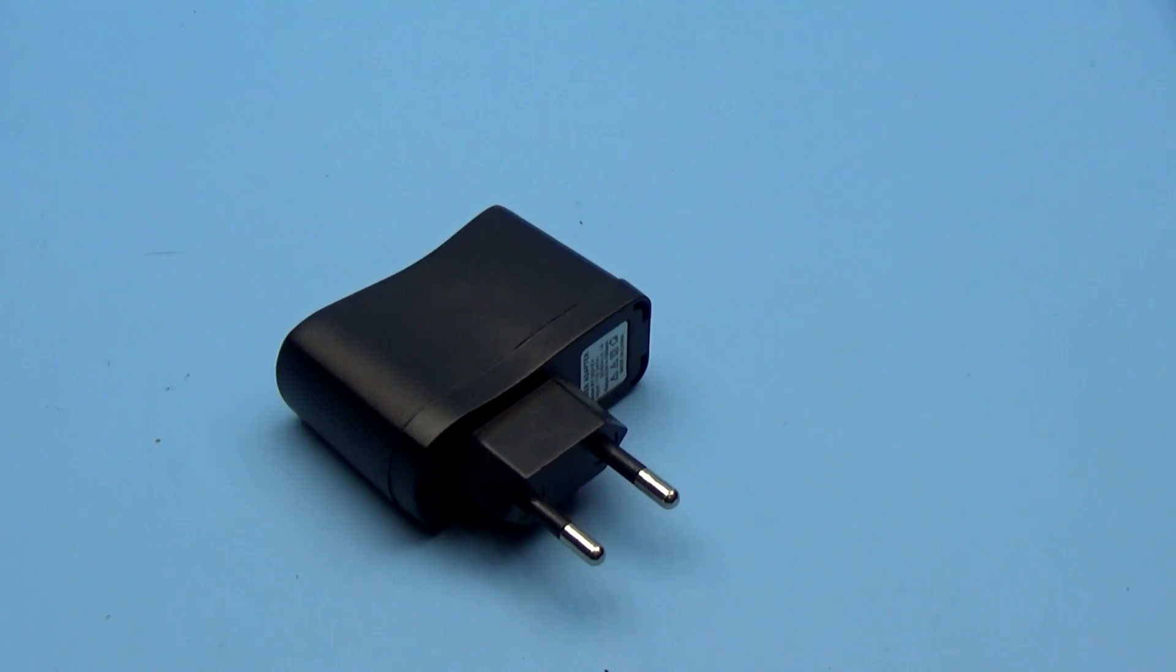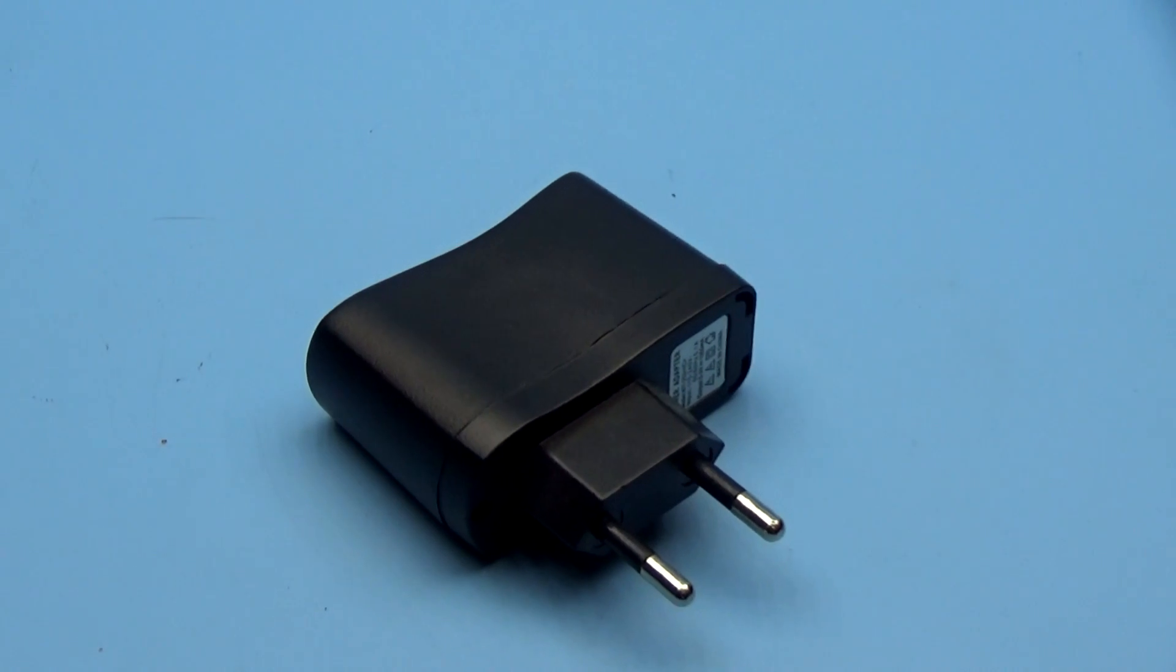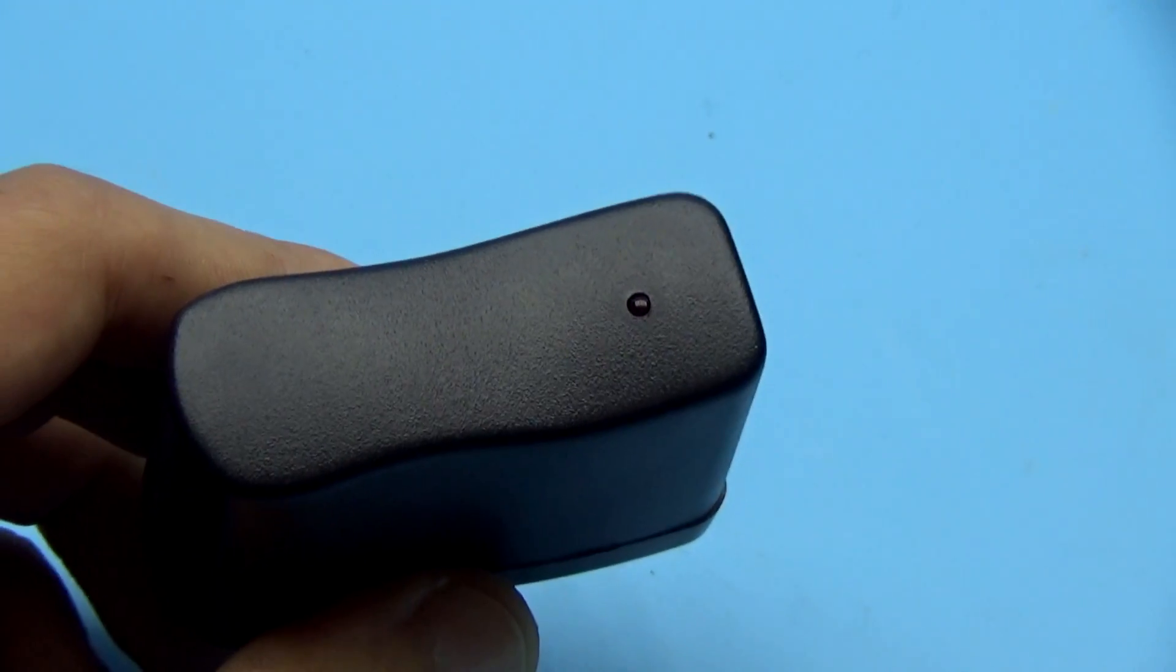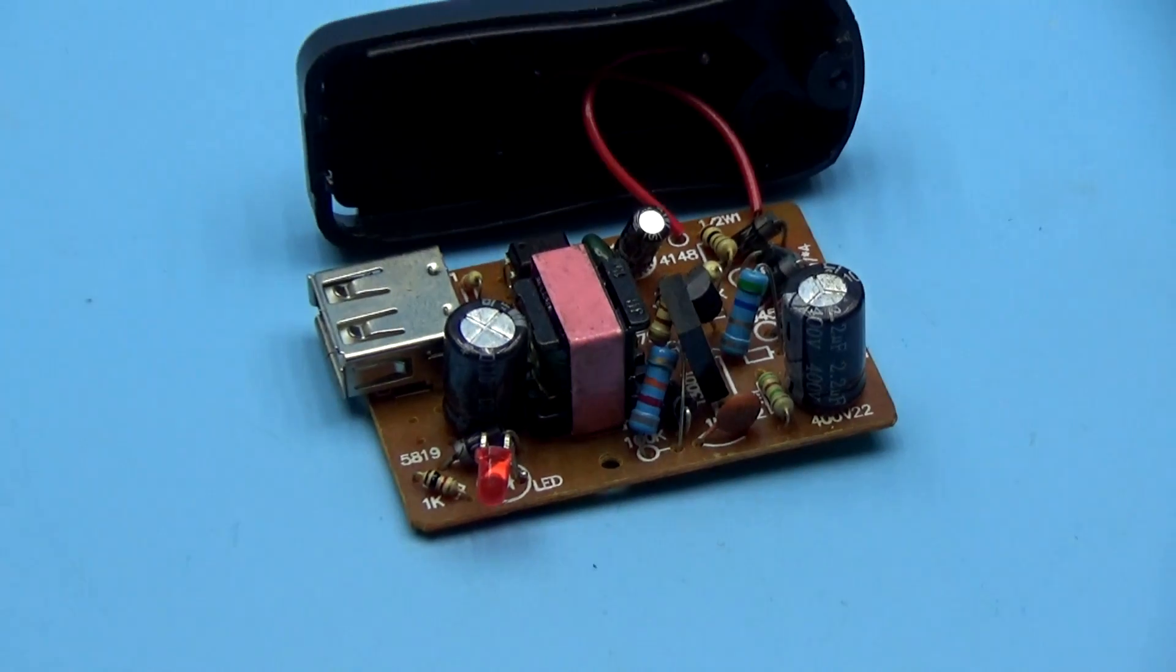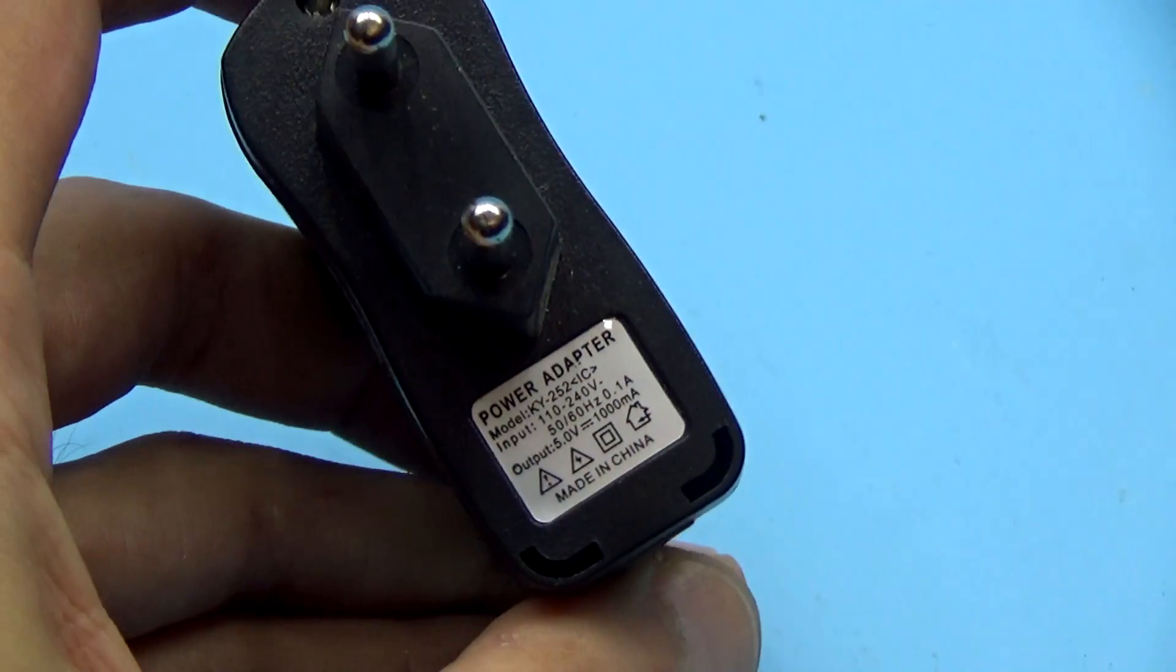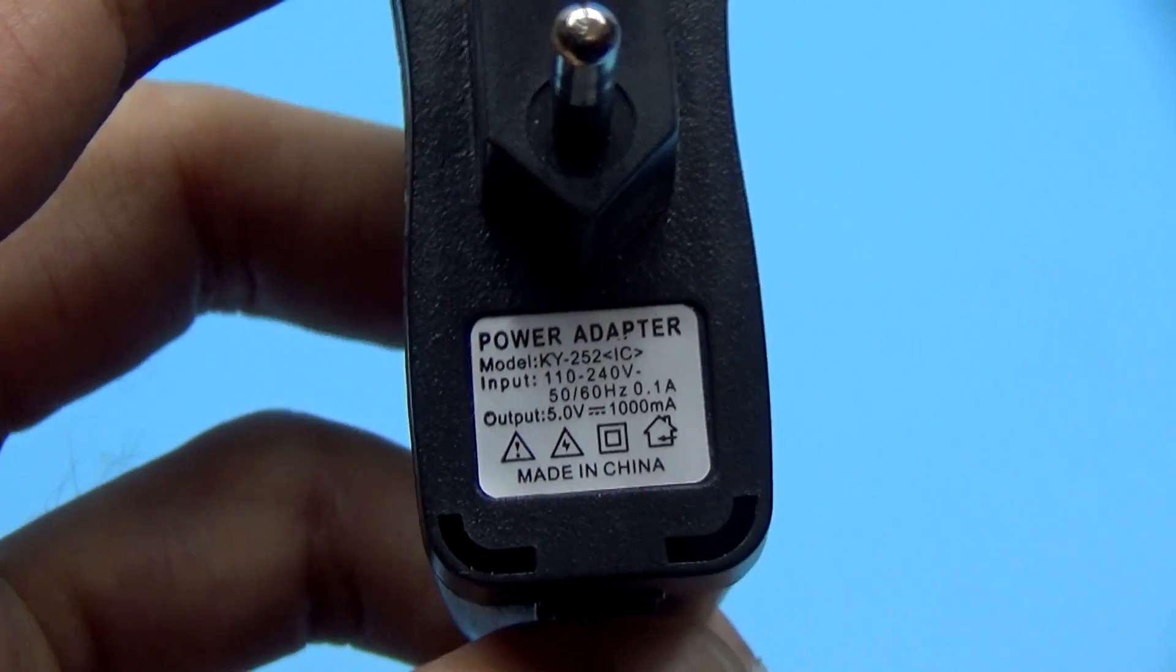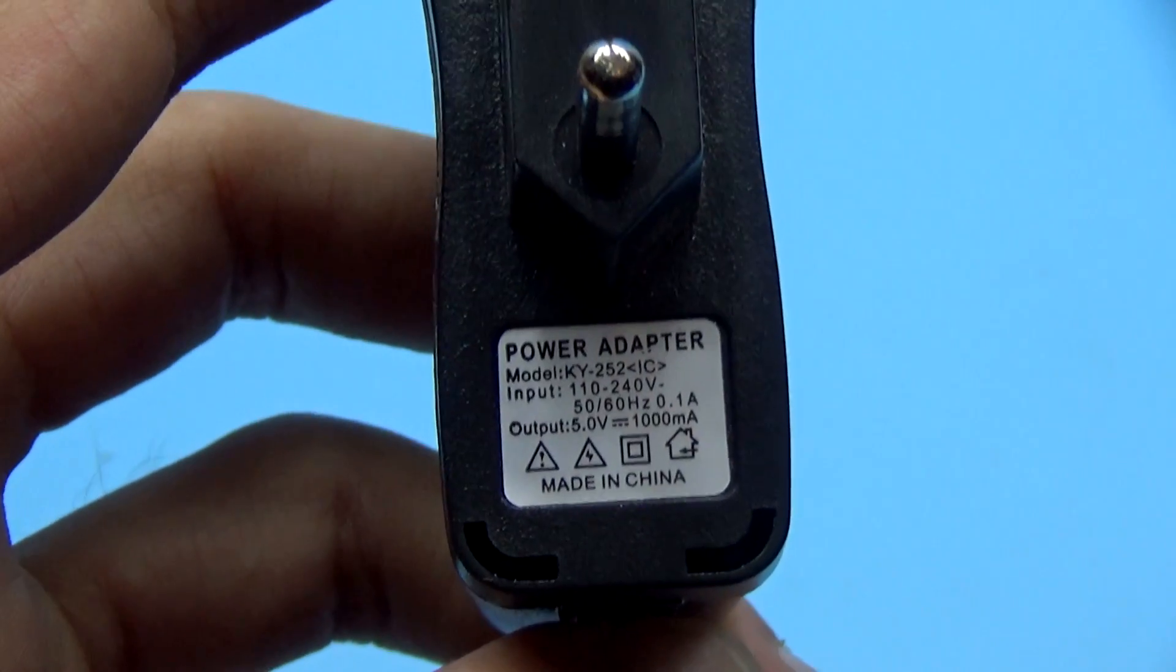As a test subject, we have a cheap Chinese phone charger. On it, I will show the principle of rework and you can use the same principle for reworking other power supplies. The manufacturer claims that power supply voltage is 5V and provides a current output of up to 1A. Well, let's check.